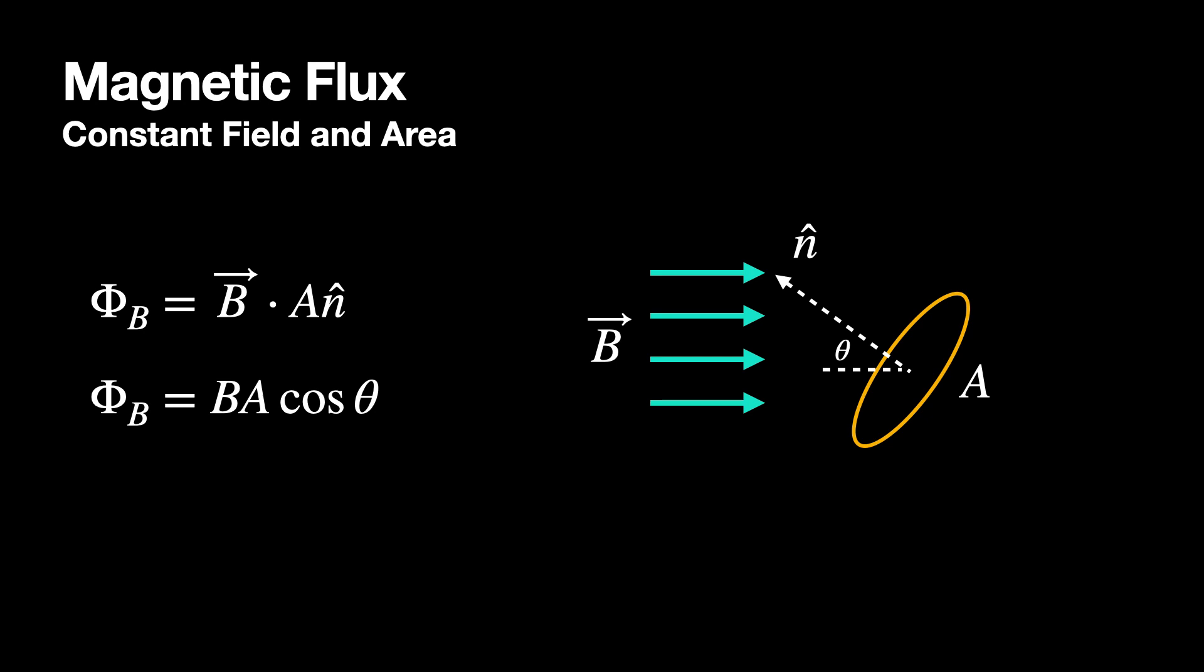This formula only works if the magnetic field doesn't change in space, so constant in space, and the area doesn't change. Imagine if you had like a sphere, the surface area of a sphere, that would be a non-constant area vector. Every different part of it points in different directions. So you would have to do something more complicated to calculate the flux, but we're not going to do that.